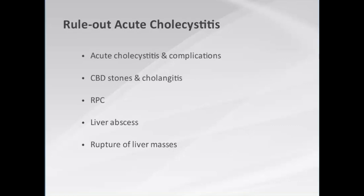When patients present to the emergency room with right upper quadrant pain, they invariably come with a requisition that states 'rule out acute cholecystitis.' But in fact, less than two-thirds of these patients will actually have acute cholecystitis. There's a whole range of other conditions, including choledocholithiasis, cholangitis, recurrent pyogenic cholangiohepatitis, liver abscess, and rupture of liver masses, that can mimic the presentation of acute cholecystitis.